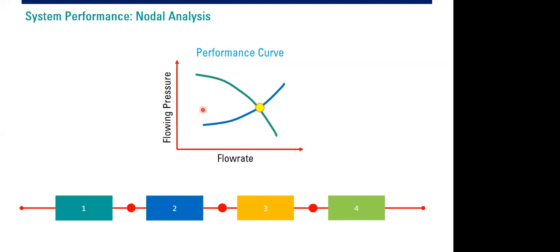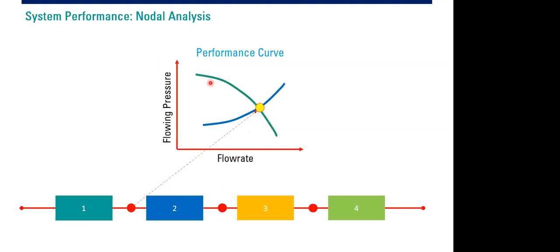If we overlay the first curve and the second curve, we will have an intersection between the performance curve of element one and the performance curve of element two. This intersection is actually coming from the node — the interface between these two blocks. And we will call it the operating point when we start talking about nodal analysis in petroleum engineering.